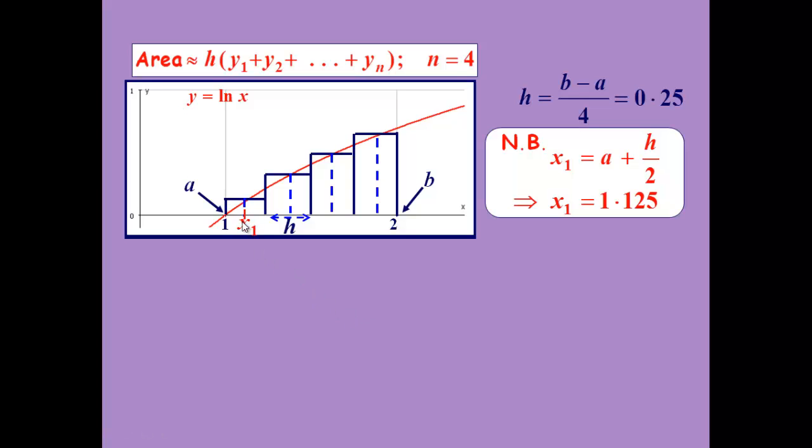This means that our first x value will be in the middle of one and one and a quarter, which is one and an eighth or 1.125. And then if we just add a quarter each time, we get the other x values. So that's adding a quarter, adding another quarter, adding another quarter.